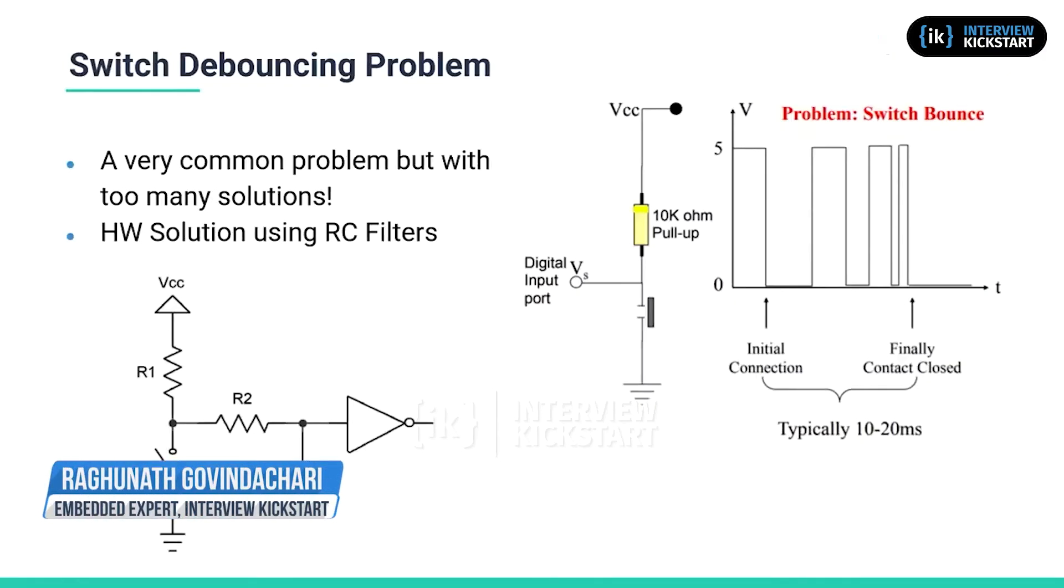Let's now look at another example of a problem statement which is very common in any electronic product. There is a mechanical switch meant for the user to operate the product. Typically, mechanical switches have springs and such.